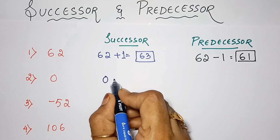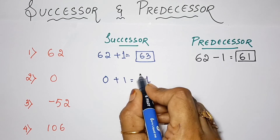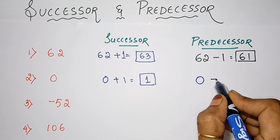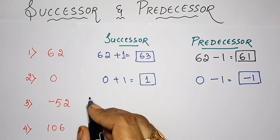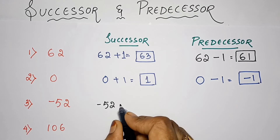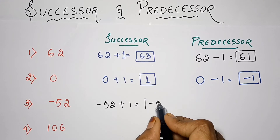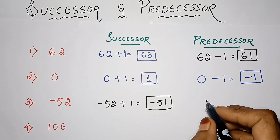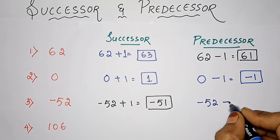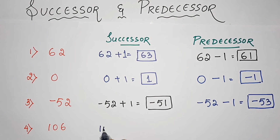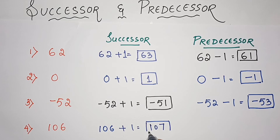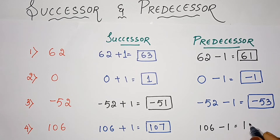Successor of 0 will be 0 plus 1 which is equal to 1, and predecessor of 0 will be 0 minus 1 which is equal to minus 1. Successor of minus 52 will be minus 52 plus 1 which is equal to minus 51, and predecessor of minus 52 will be minus 52 minus 1 which is equal to minus 53. Successor of 106 will be 107 and predecessor of 106 will be 105.